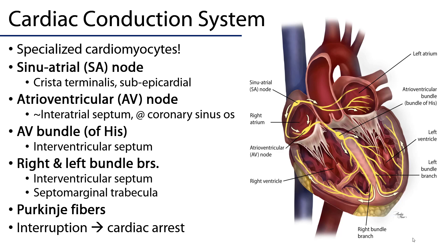I'm not going to get into any depth of physiology here. I just want to relate the anatomical structures of where these cardiomyocytes are found so that you can visualize it as you learn your physiology. Our story begins in the SA node, the pacemaker region of the heart, which has the highest intrinsic rate of cells within the heart.